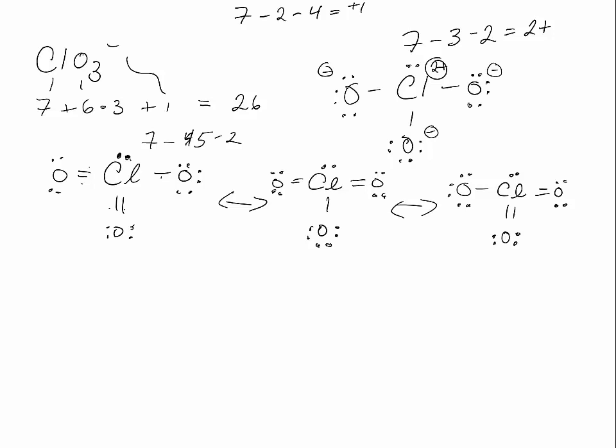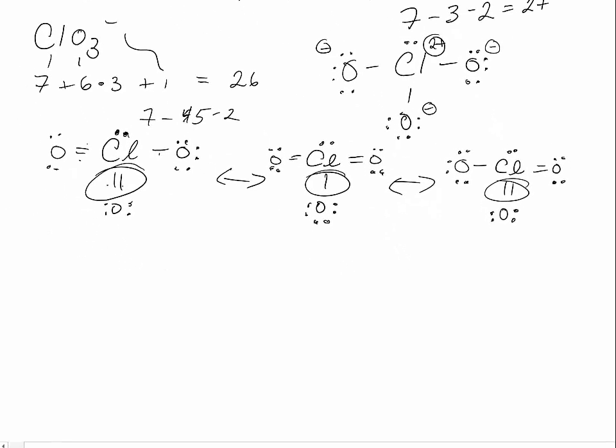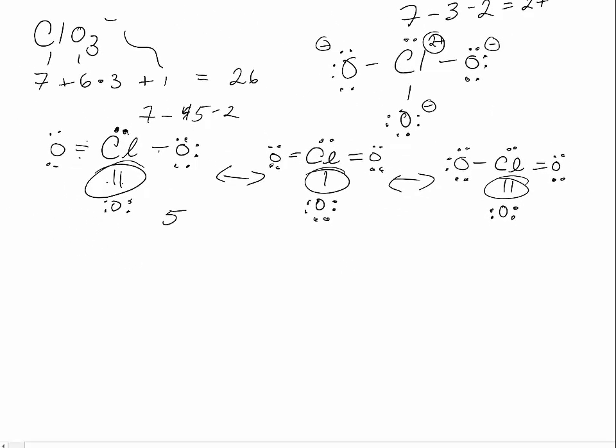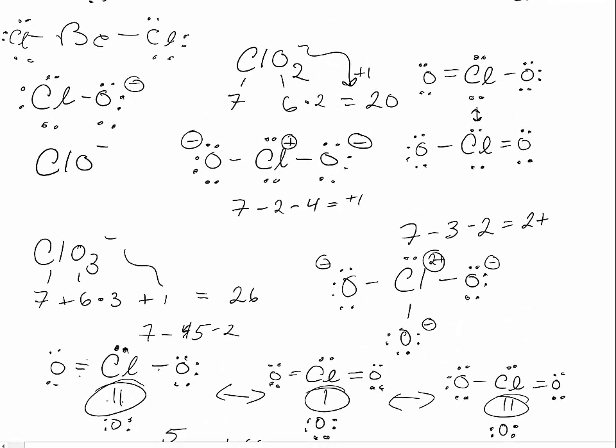So there's three resonance structures here for chlorate. The bond order is two plus one plus two, which is five over three different structures, or again, one point six six approximately for the bond order. The bond order in the chlorite was one point five. The bond order in the hypochlorite was one.